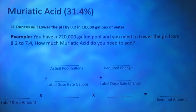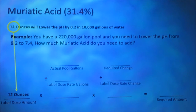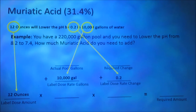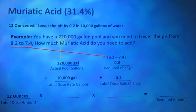You have a 220,000 gallon pool and you need to lower the pH from 8.2 to 7.4. How much muriatic acid do you need to add? The label instructions read: 12 ounces will lower the pH by 0.2 in 10,000 gallons of water. Our label dose amount is 12 ounces, our label dose rate gallons is 10,000 gallons, and our label dose rate change is 0.2.